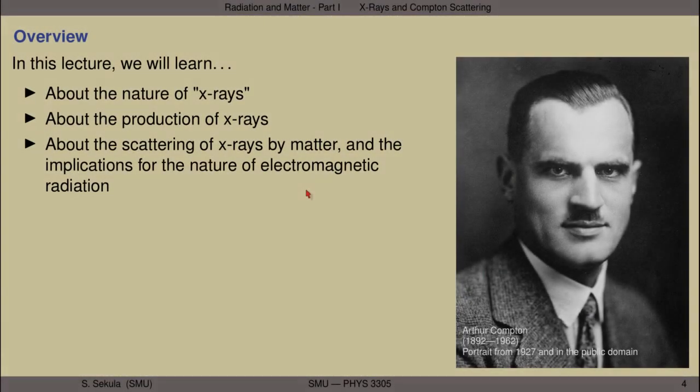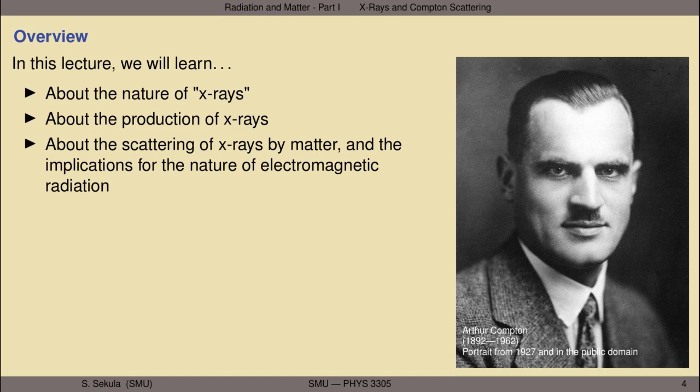In this lecture, we will learn about the following things. We will learn about the nature of a kind of radiation called x-rays. We will learn a little bit about the production of x-rays, and finally we will look at the scattering of x-rays by matter and the implications for the nature of electromagnetic radiation.